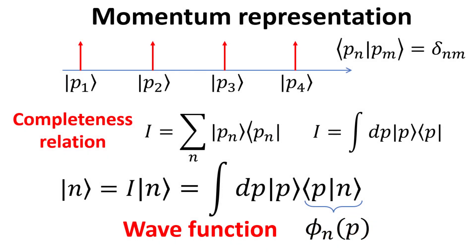By the same token, we can also define a set of basis vectors with well-defined momenta, such as p1, p2, and so on. Again, we assume these basis vectors are orthonormal, and it also has its analogous completeness relation. The state n-ket can be expressed in momentum representation by introducing the completeness relation. The wave function in momentum representation is given a different symbol than that of the position representation, since the form of the function in general are going to be different.